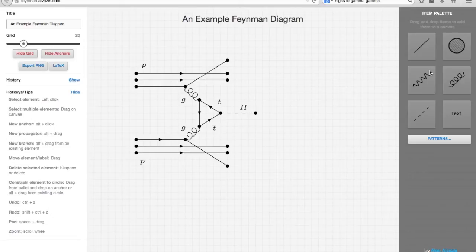The toolbar on the left contains diagram-wide settings, including the diagram's title, the grid size, various export options, the history, and a list of the hotkeys available to you.